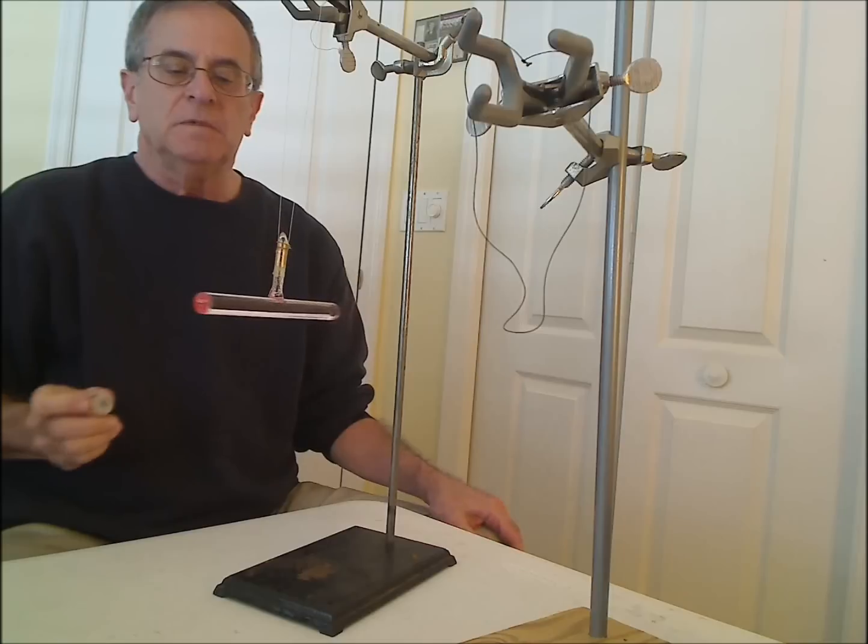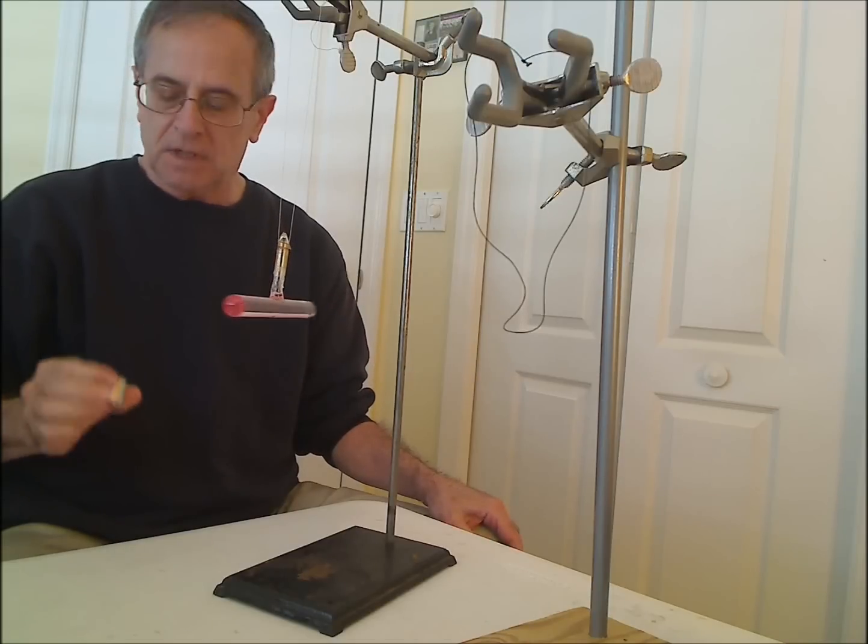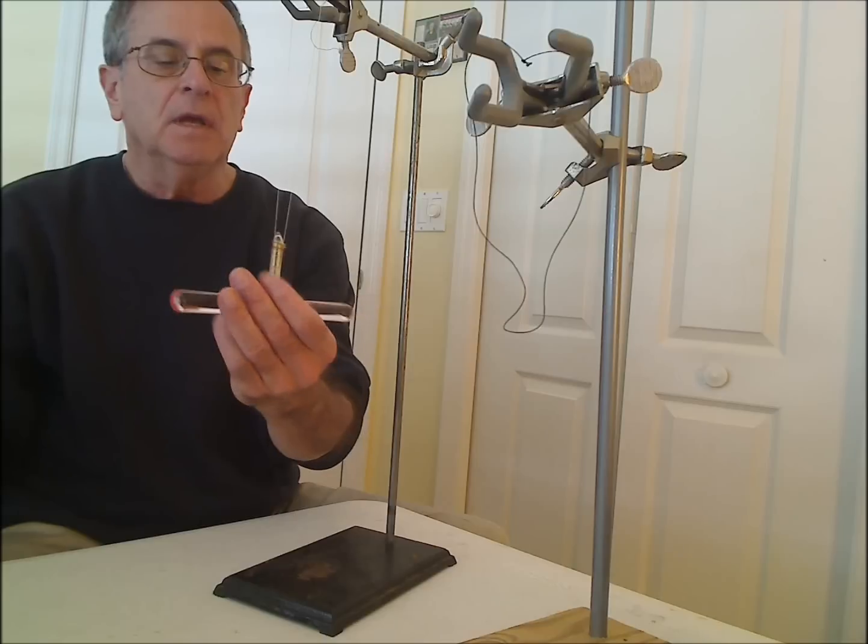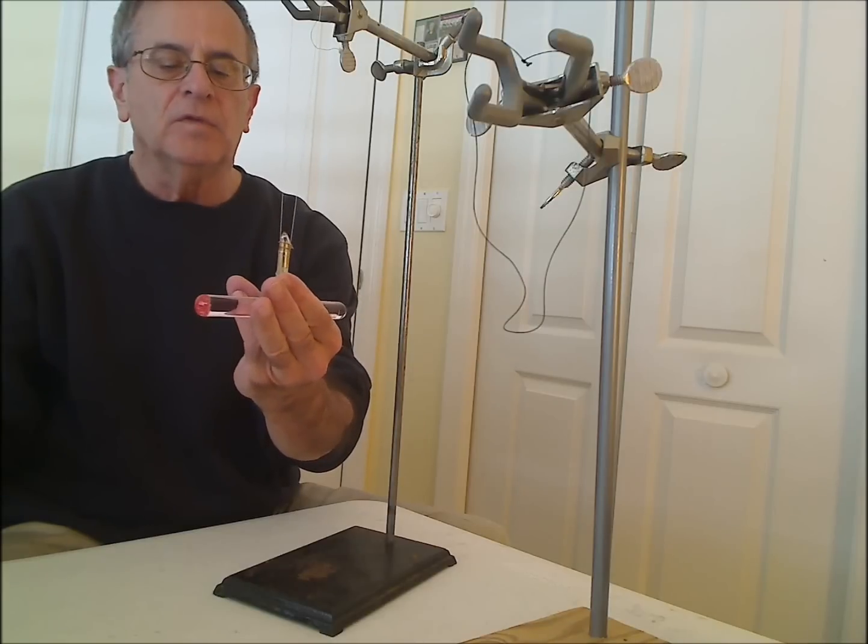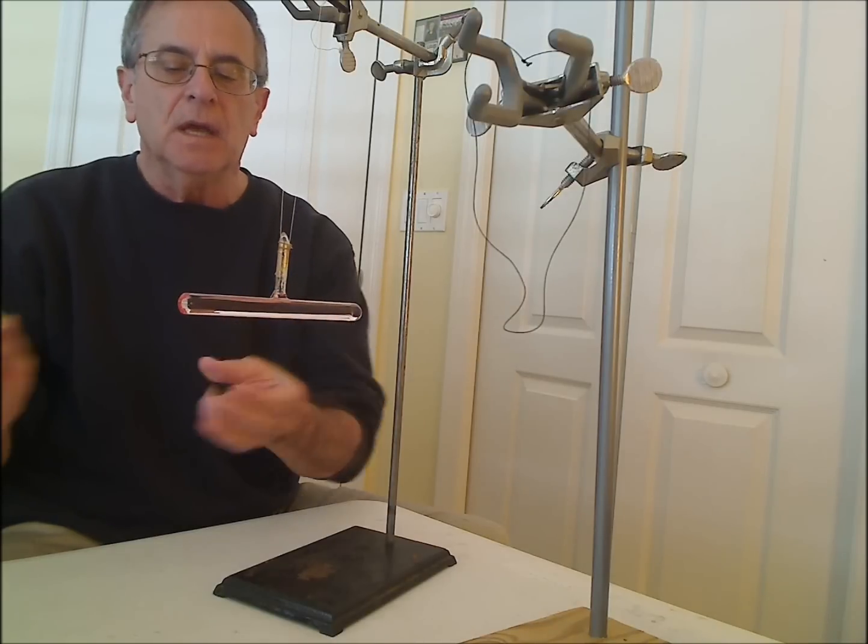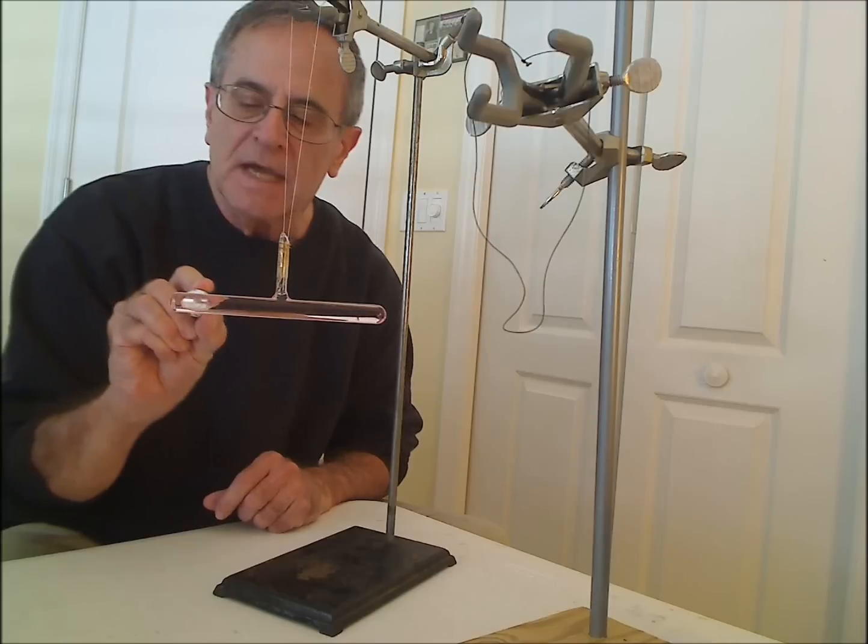The paramagnet is attracted to the North Seeking pole. Now let's do it with the South Seeking pole of the magnet. And you will see that it's also attracted to the South Seeking pole.